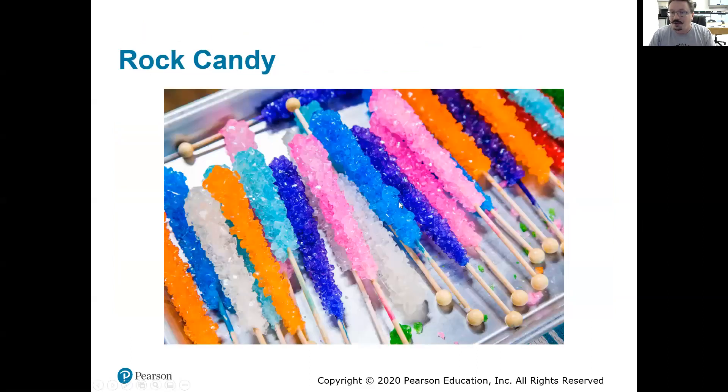Here's another example. You've probably seen rock candy before. This is actually how they make rock candy. They're going to make a supersaturated solution of sugar, and then they're going to essentially disturb that supersaturated solution and get these sugar crystals to form, in this case, around those sticks, sort of using that stick like a seed crystal.